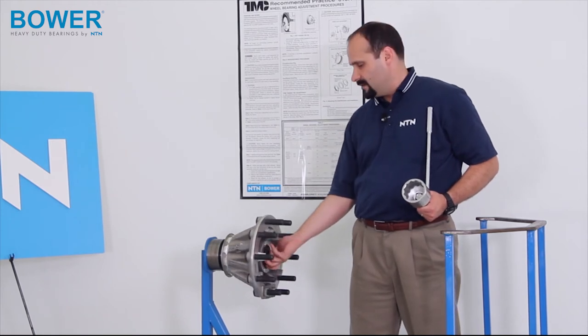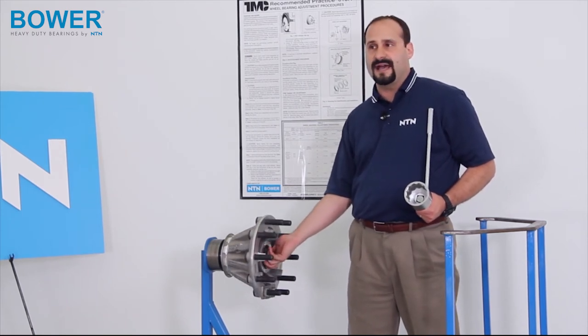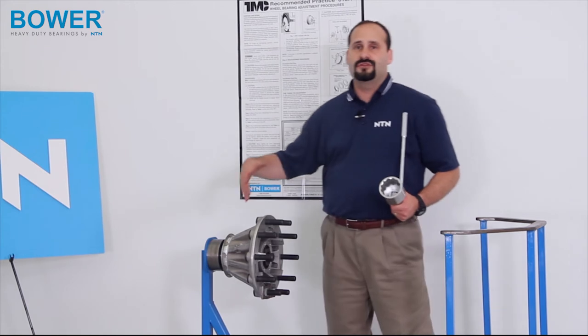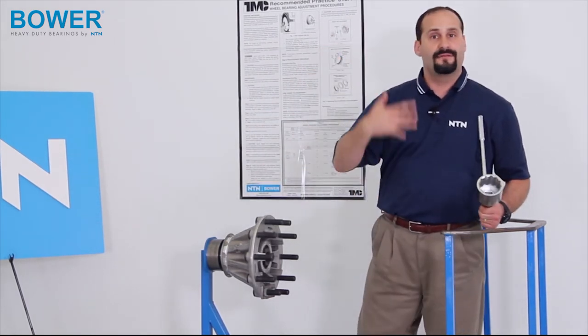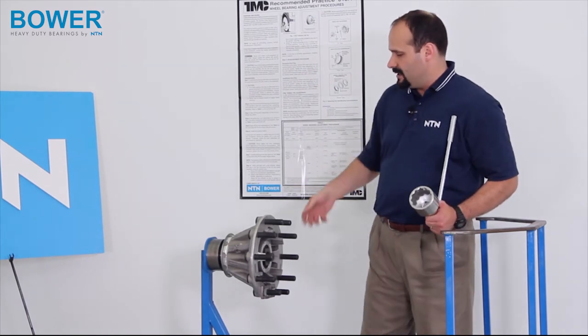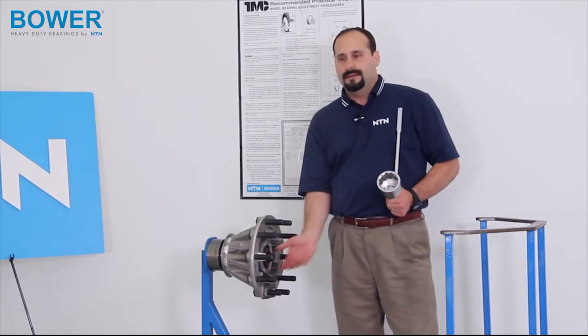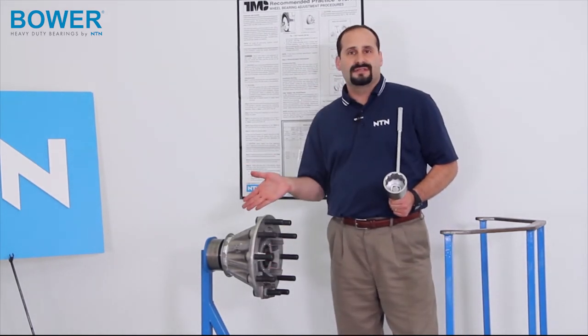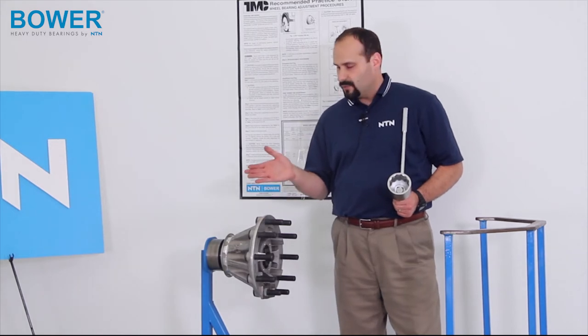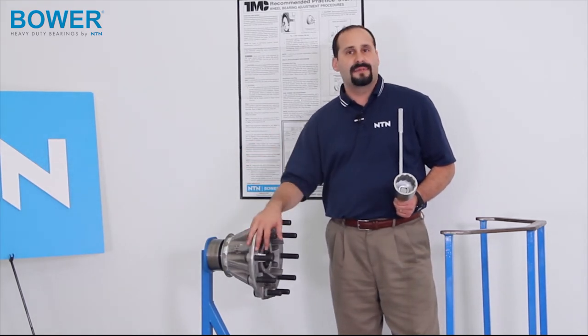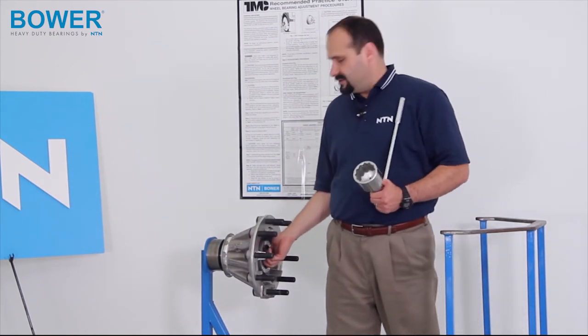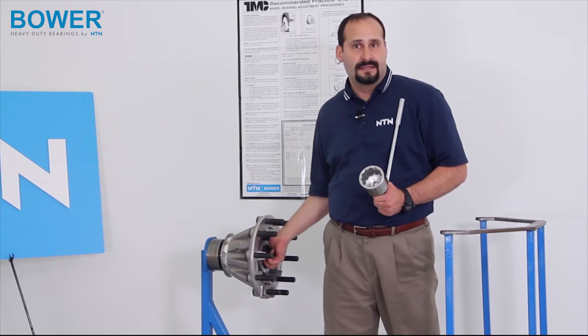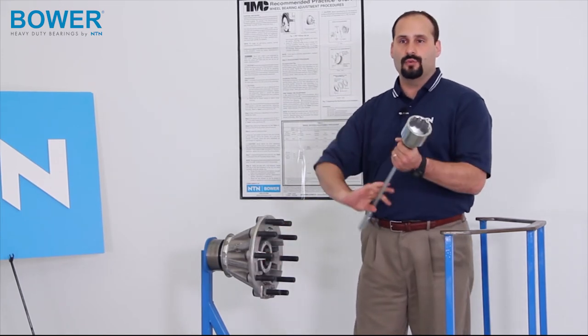What I like to recommend then, take that nut back to hand tight. That way, if you should be called into the office to discuss something on the last job you did, you have a phone call, it's break time, you don't lose all that work you did seating the rollers in this hub. You don't have to worry about someone coming by and bumping the truck or the truck getting jostled and the rollers shaking off and all the work you did being ruined. So, just take it back to hand tight to save your work so in case you get called away.